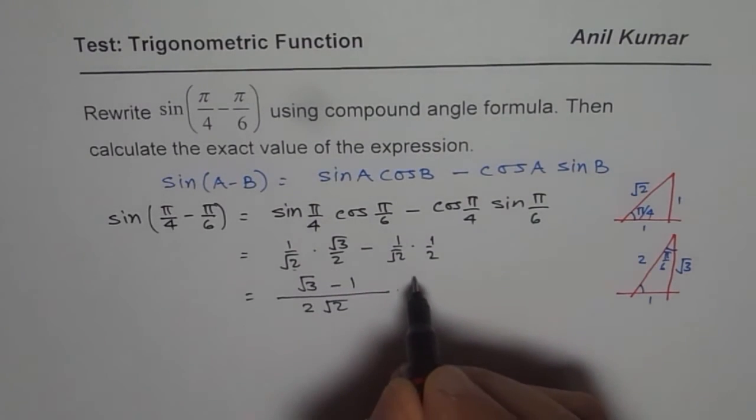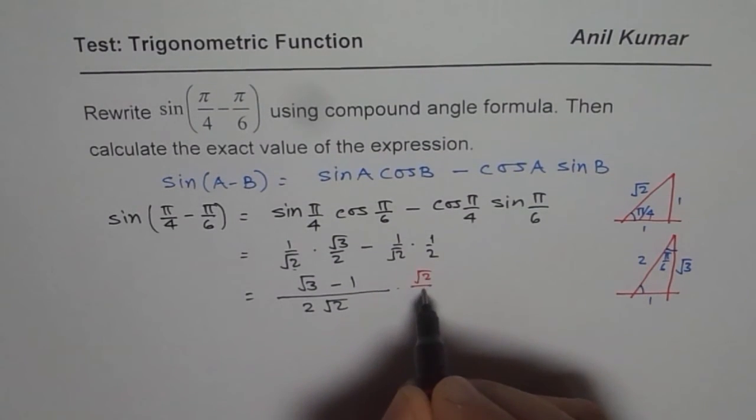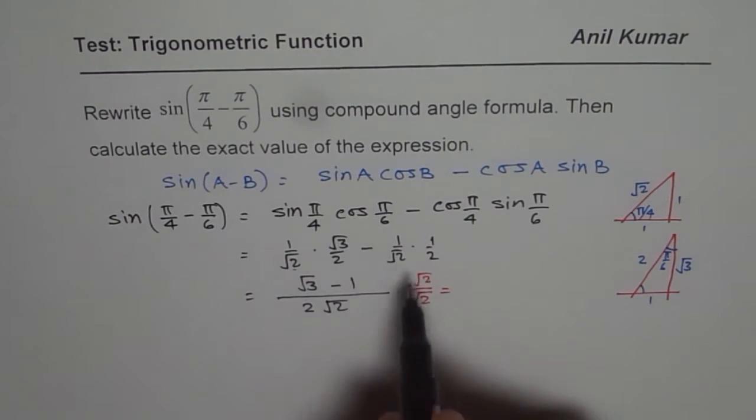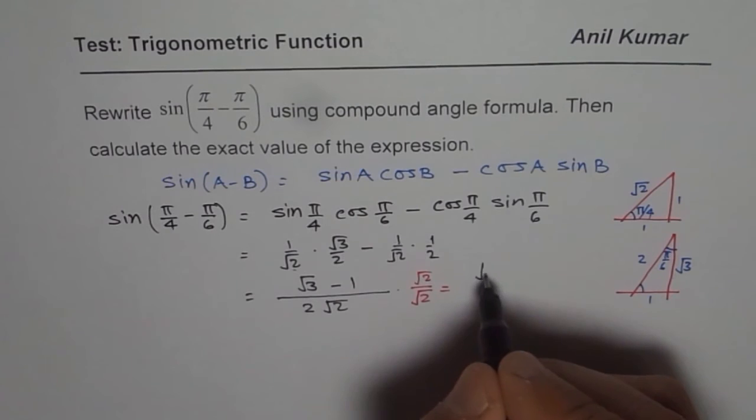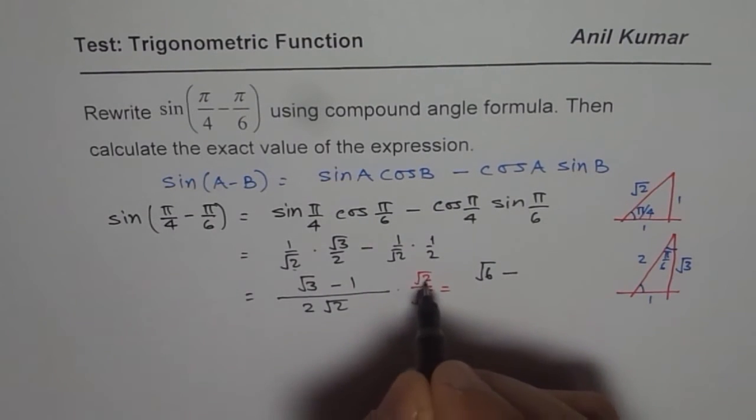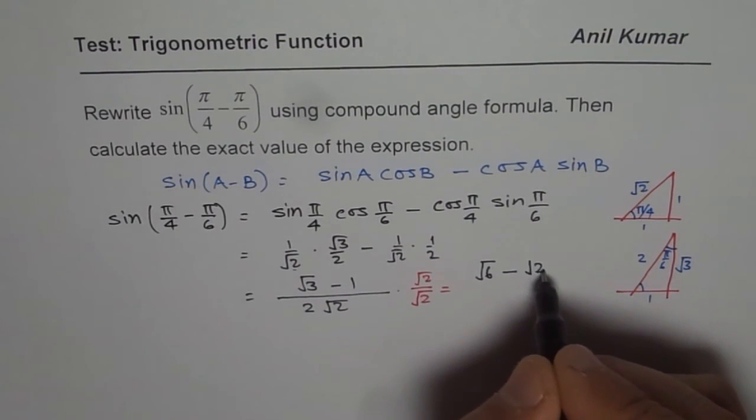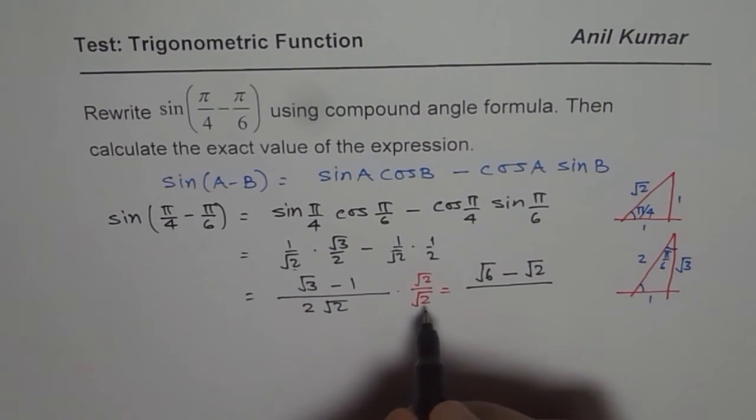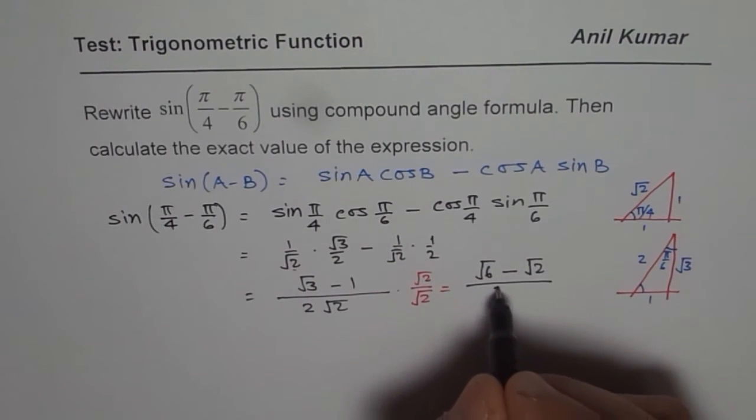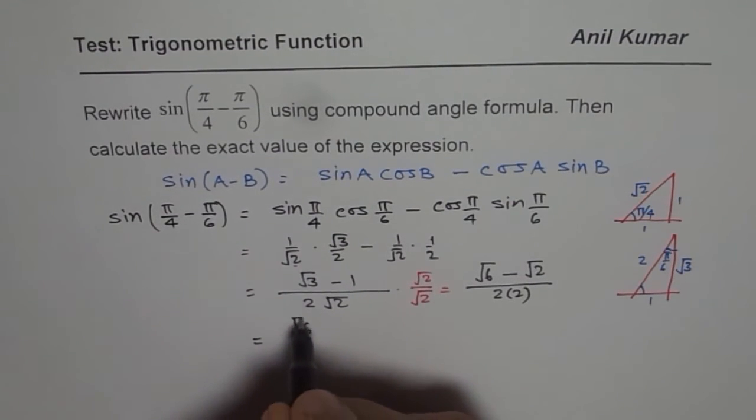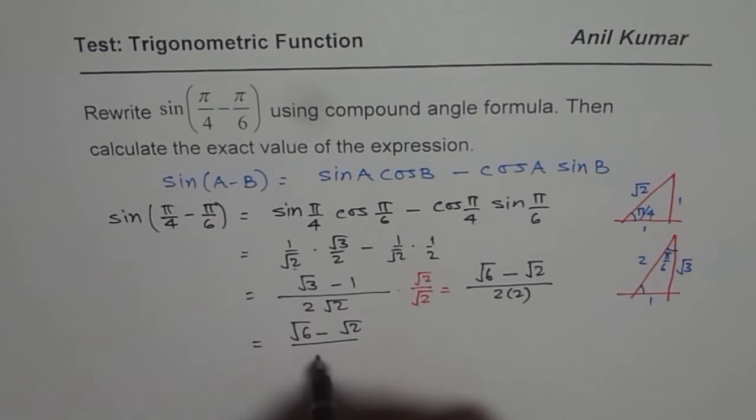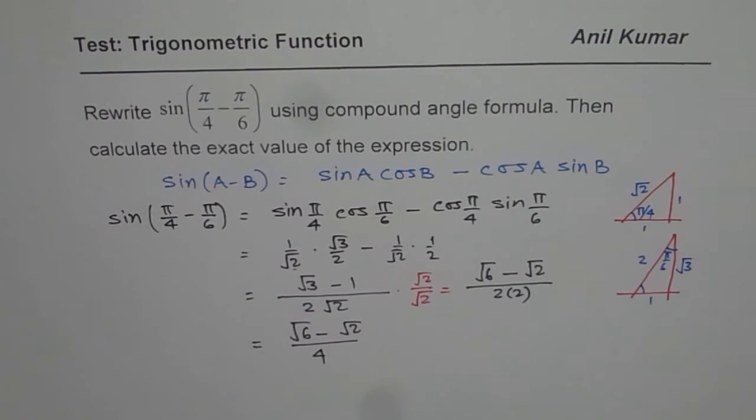So let us rationalize. That really means you need to multiply and divide by √2. So when you do that, in the numerator you have to apply the distributive property: √2 times √3 becomes √6 minus √2 times 1 is √2. In the denominator, √2 times √2 is 2, so we get 2 times 2. So we could write this answer as (√6 - √2)/4. So that is the final answer.